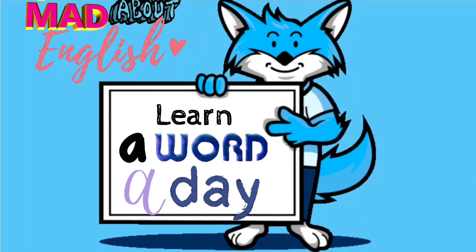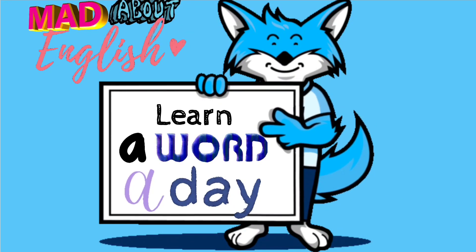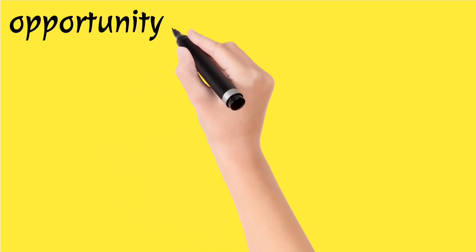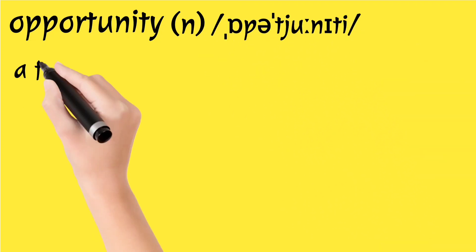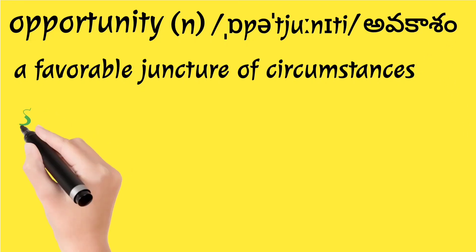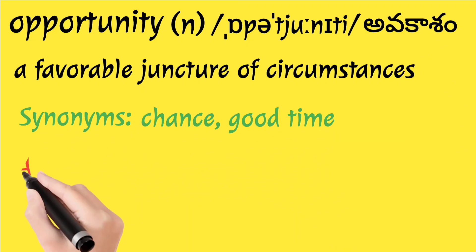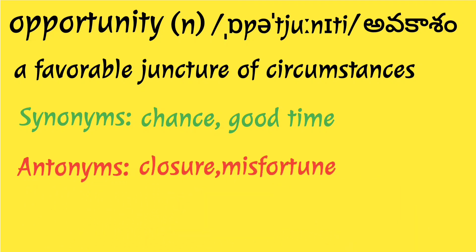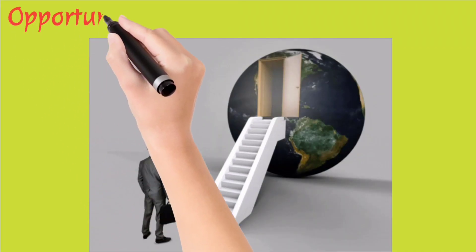Hi dear ones, welcome back to Mad About English. Today's word is 'opportunity' — it's a noun. Definition: a favorable juncture of circumstances. In Telugu: avakasam, sad avakasam. Synonyms: chance, good time. Antonyms: closure, misfortune. The first example is here.